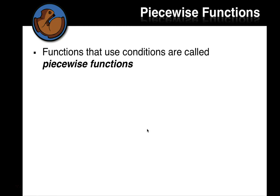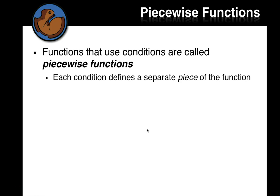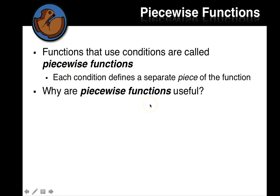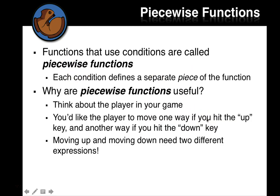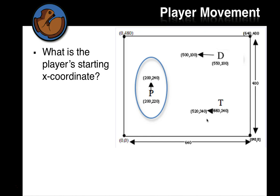Functions that use conditions are called piecewise functions. Each condition defines a separate piece of the function — that's why it uses the term piecewise. Think about the player in your game: you'd like to move the player one way if you hit up and another way if you hit down. Moving up and down need two different expressions, so what we do is dependent on what key we hit. Let's look at an example of player movement.